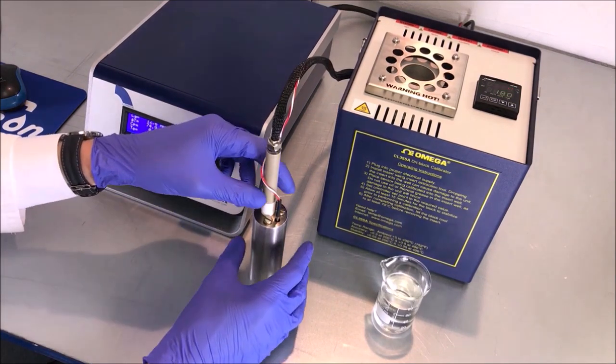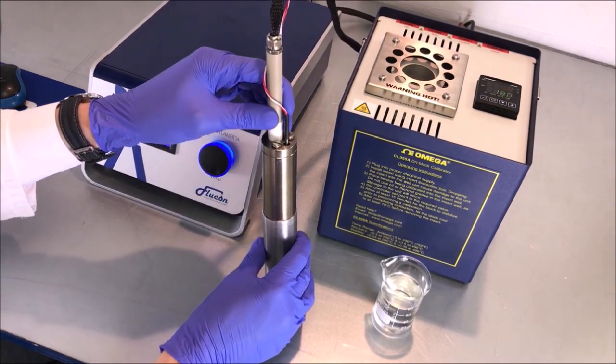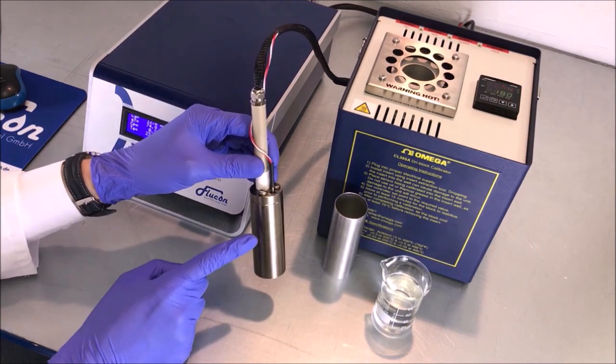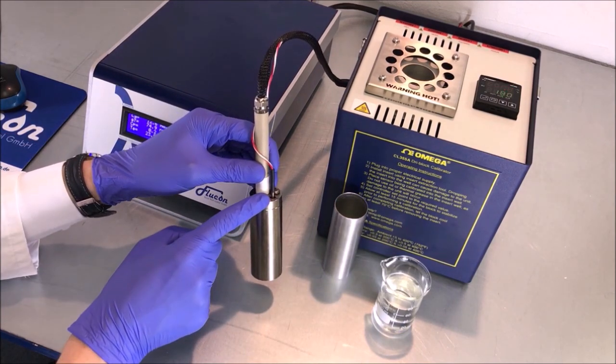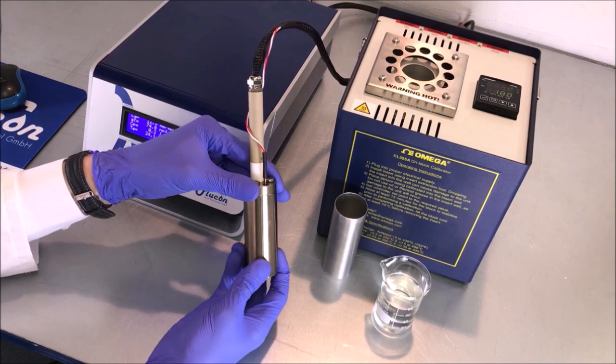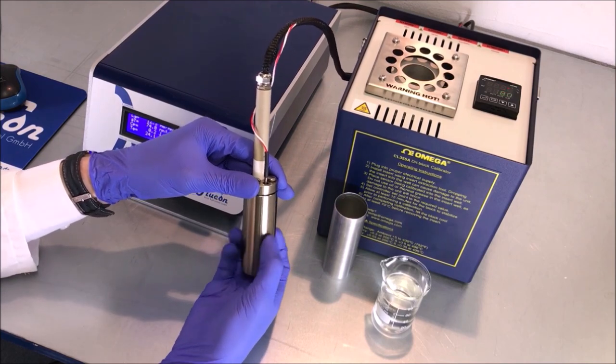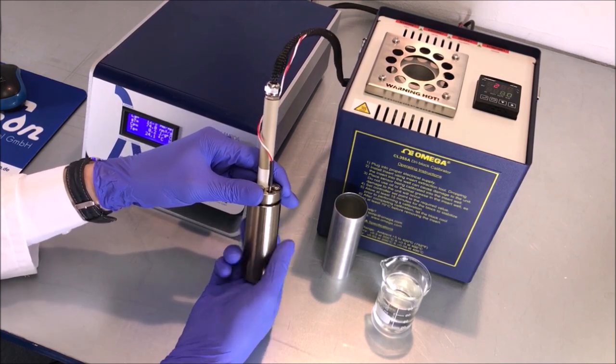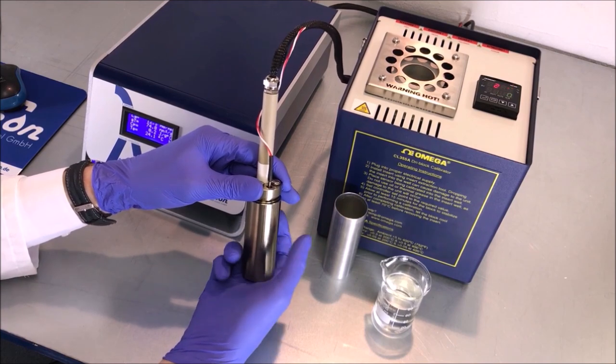First, pull the sensor out of the adapter sleeve. Next, you can unscrew the sample cup from the sensor head. Be careful with the last turns of the thread and make sure you hold on to the cup once it's loose.